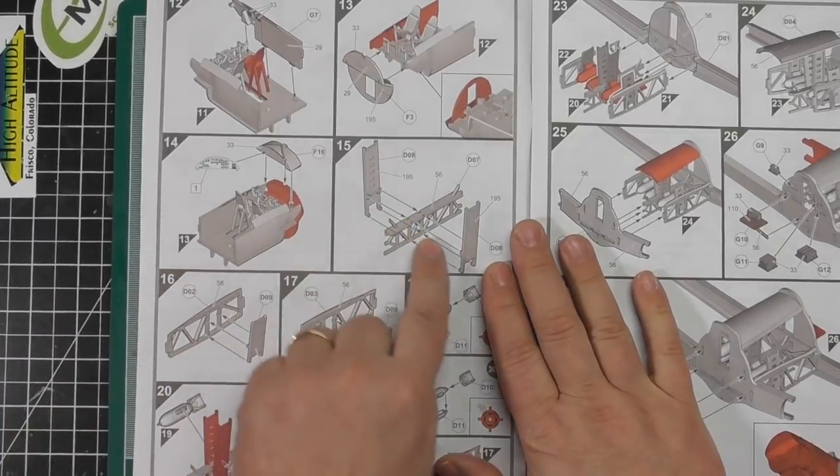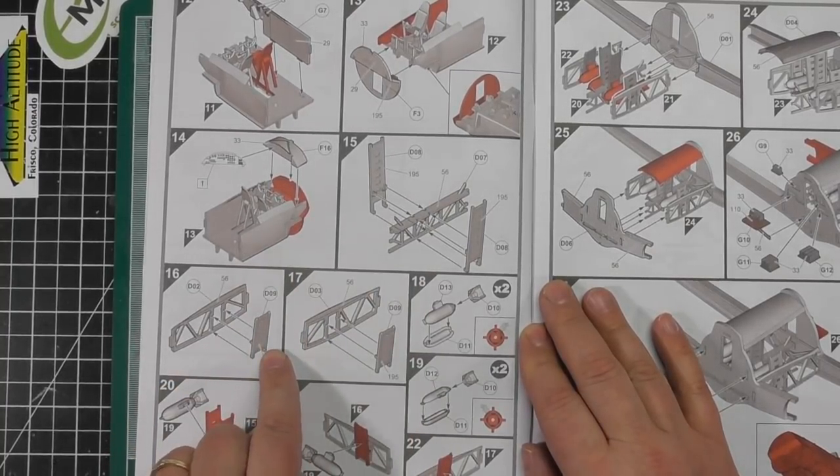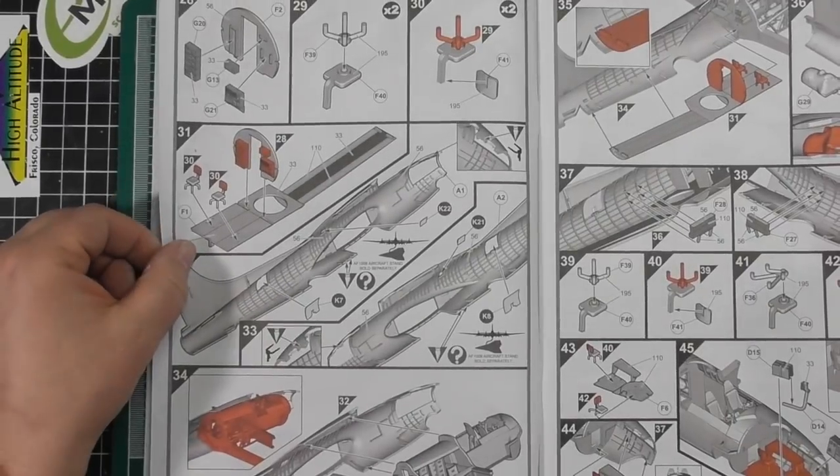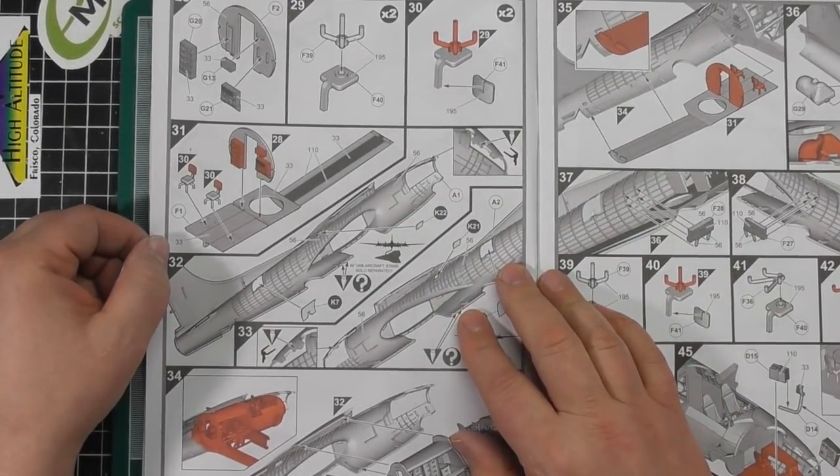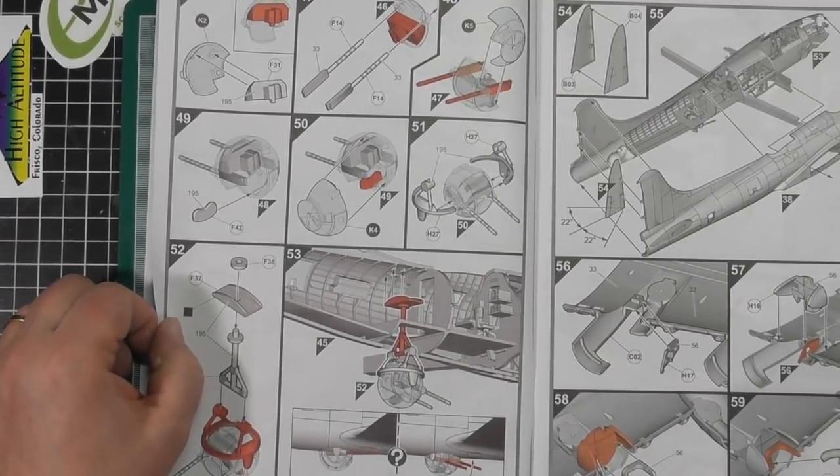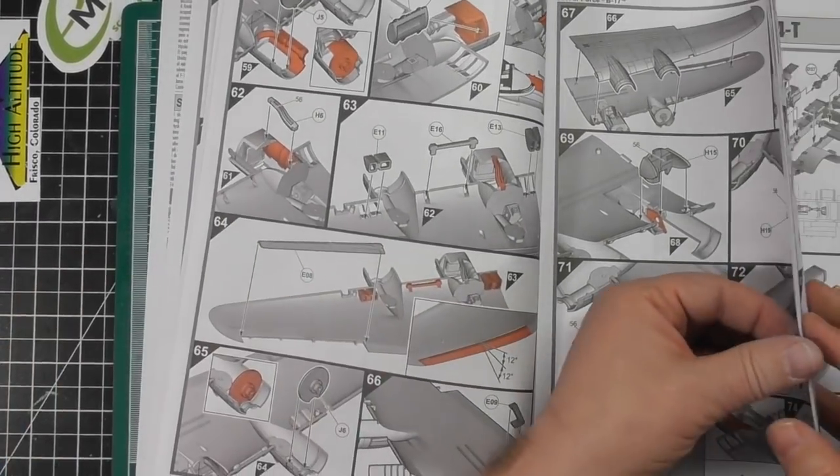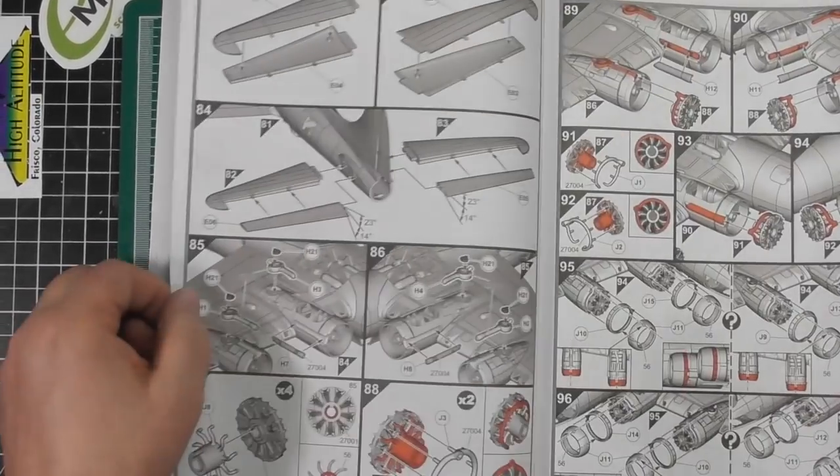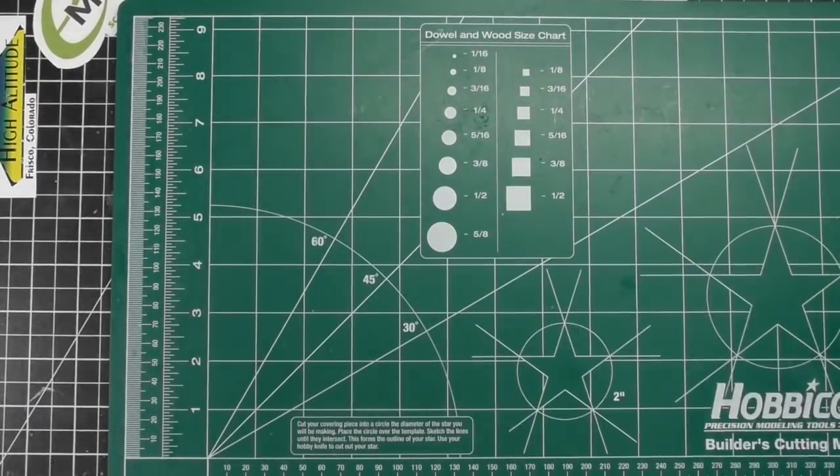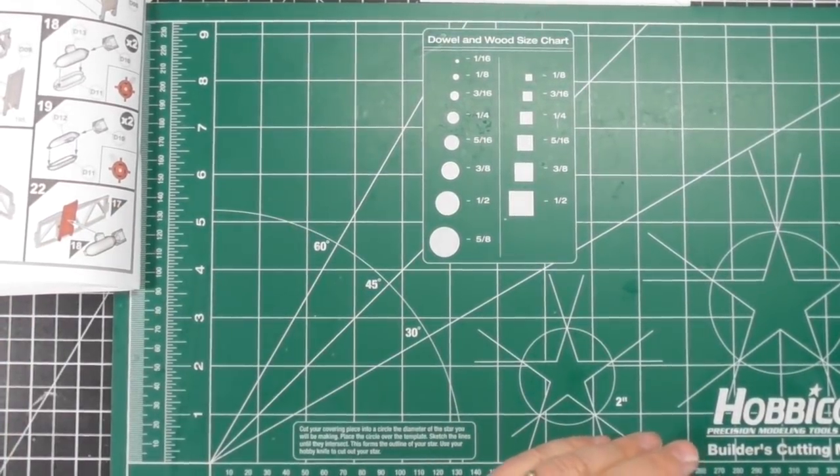So we're going to start with doing some work on step 15 with the bomb bays. We're going to put the bomb bay parts together, then the bombs together. Then we're going to do some seat sub-assemblies, maybe some wing sub-assemblies, definitely some elevator sub-assemblies and possibly the engines. You don't have to follow the steps, you can jump around, do some sub-assemblies, keep yourself fresh and from getting burned out.